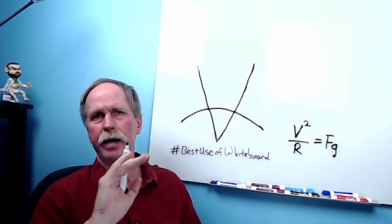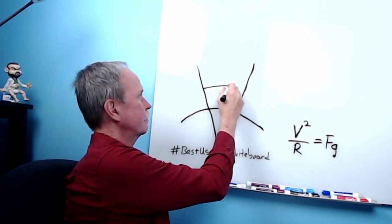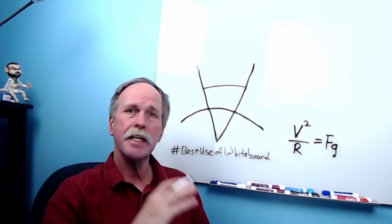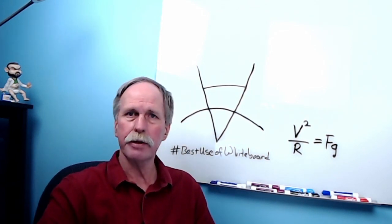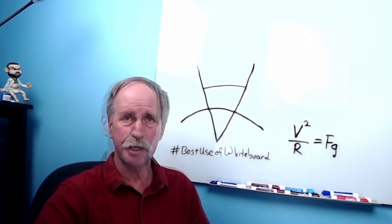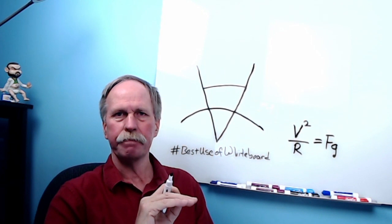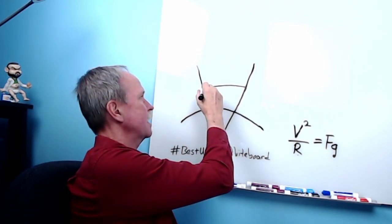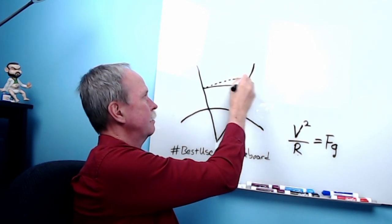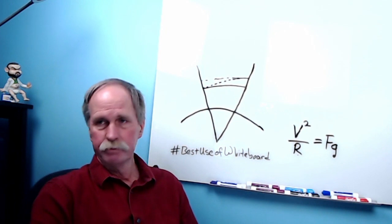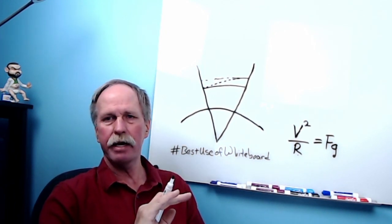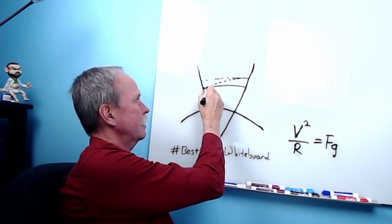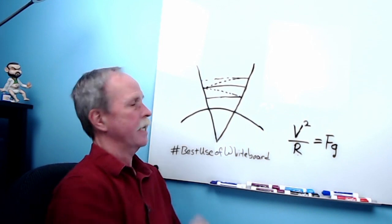Say you have a satellite in orbit around the earth at a certain distance above the surface and a certain radius from the center of the earth, going along at a steady speed. It will stay that distance above the earth as it goes all the way around in a circular orbit. But what happens if you speed the satellite up? If you increase the speed, you have to increase the radius, so the satellite will go into a higher orbit. Likewise, if you slow the satellite down, you decrease the speed, decrease the radius, and bring it down to a lower orbit.